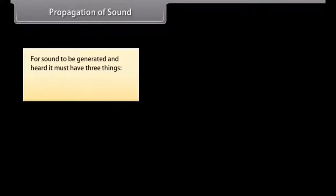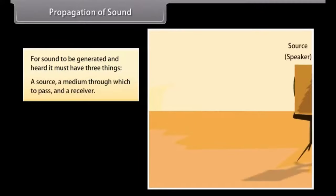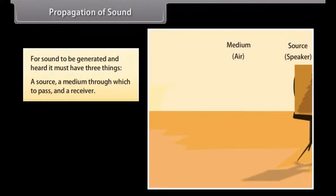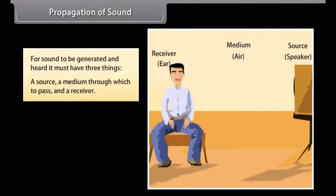Propagation of sound. For sound to be generated and heard, it must have three things. They are a source, a medium through which to pass, and a receiver. Let us assume the source is the speaker's voice. The medium through which it is transmitted is air, and the receiver is the listener's ear.